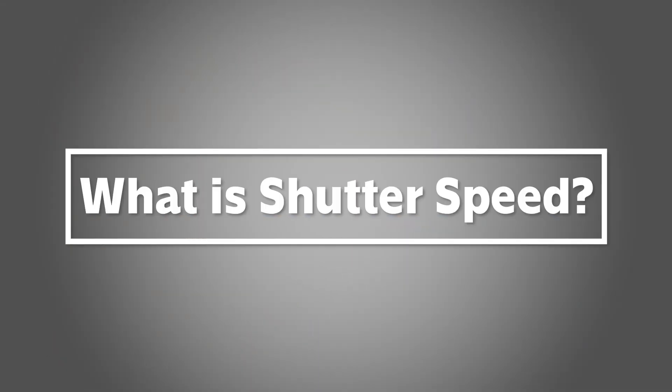So first, what is shutter speed? To understand shutter speed, first we should know what a shutter is. When light travels through your camera lens and the aperture, it goes through your shutter. This shutter is a curtain that blocks light from reaching your camera sensor.